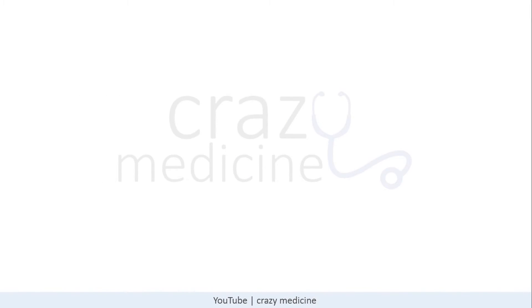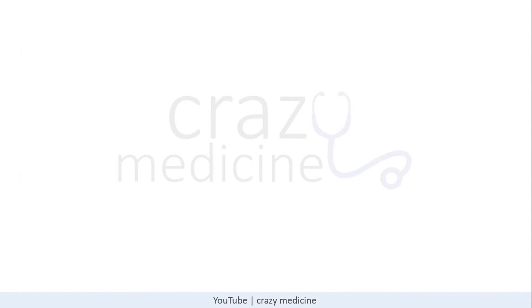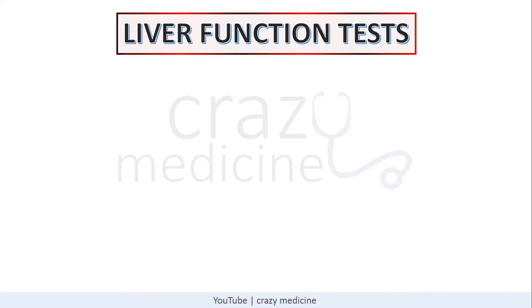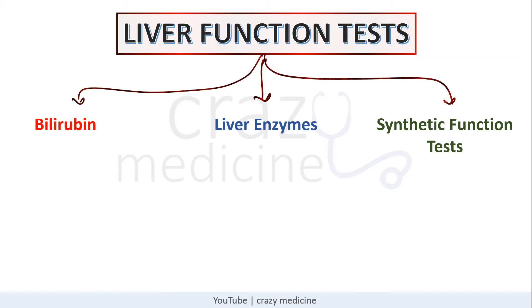Hello friends. In this video we will discuss liver function tests and their interpretation in detail. Basically, liver function tests include the following: estimation of bilirubin levels, estimation of liver enzymes, and determination of synthetic function tests.